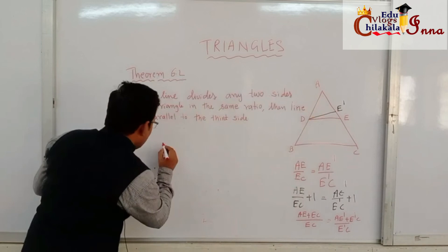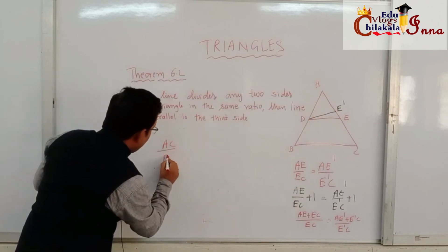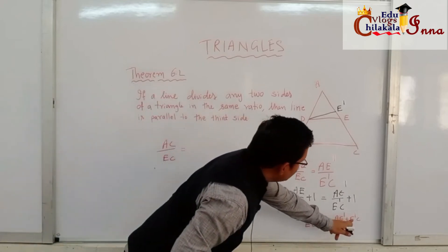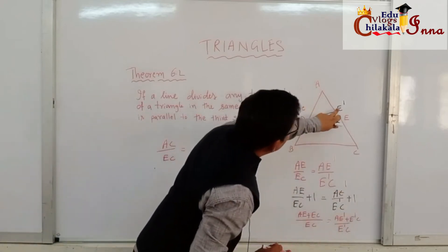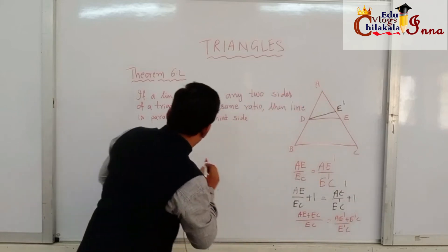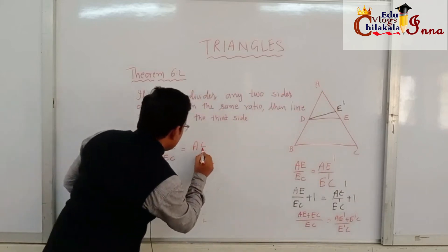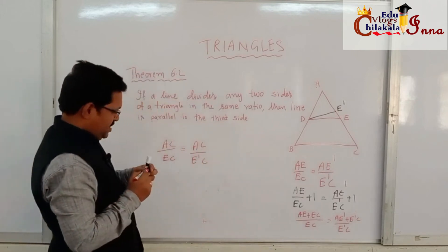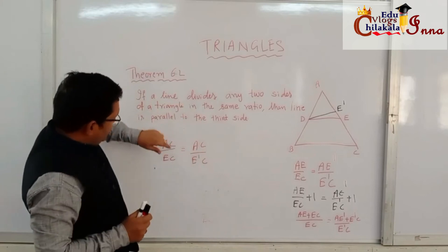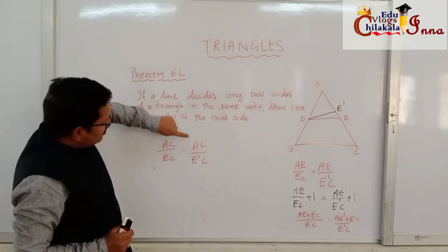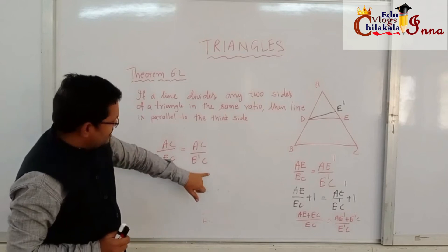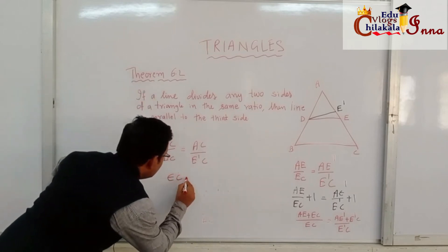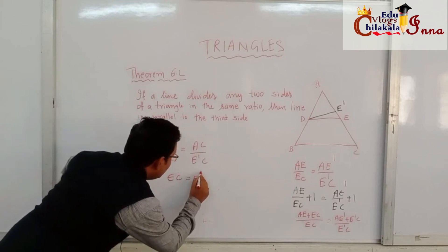Now, AE + EC = AC, and AE' + E'C = AC as well. So we get AC/EC = AC/E'C. This means EC = E'C.